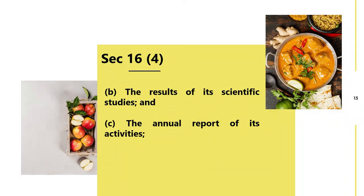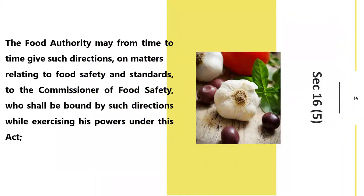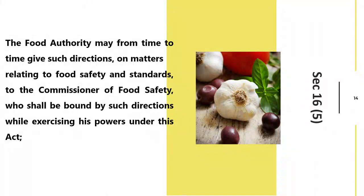Fifth subpoint: the Food Authority may from time to time give such directions on matters relating to food safety standards to the Commissioner of Food Safety, who shall be bound by those directions while exercising powers under this act. The Commissioner of Food Safety in each state can be given directions only in matters relating to food safety standards, and they are bound to follow those directions.